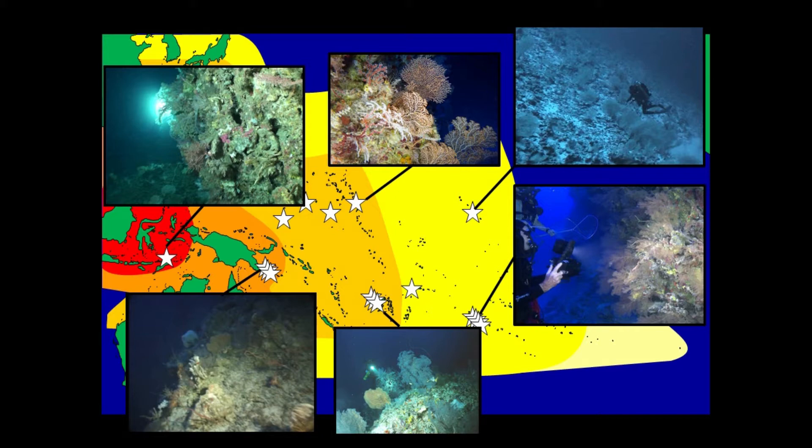Indonesia, Philippines, New Guinea, Palau, Cook Islands, Moorea — all these places, while on the surface you would expect them to be vastly different, were actually very, very similar in their deep reef communities.